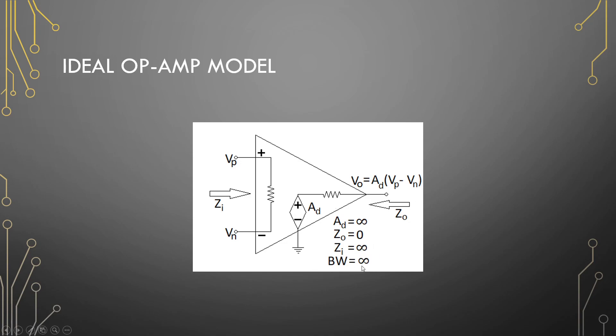The bandwidth of this op-amp if we are assuming it is ideal is also infinite, so we don't worry about the frequency model when we talk about the ideal op-amp. Also the output voltage is our gain multiplied by the non-inverting subtracted by the inverting voltage.